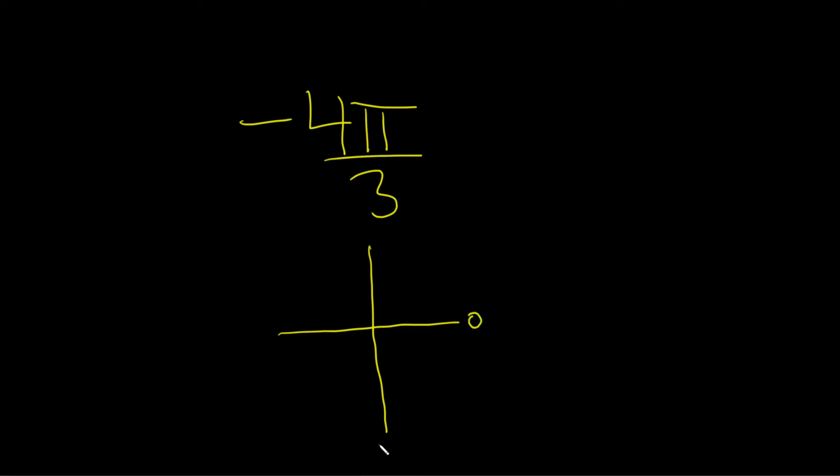So this is 0, this is negative pi over 2, because we're going in the negative direction, and this is negative pi. And then this is negative 3 pi over 2, going backwards because we're dealing with negative angles.